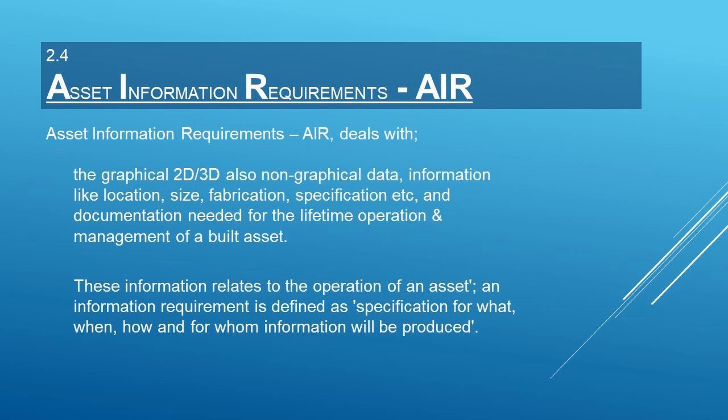Asset Information Requirements, AIR, deals with graphical information such as 2D and 3D, as well as non-graphical data like location, size, fabrication, specification, and documentation needed for the lifetime operation and management of a built asset. This information relates to the operation of an asset. An information requirement is defined as a specification for what, when, how, and for whom the information will be produced.